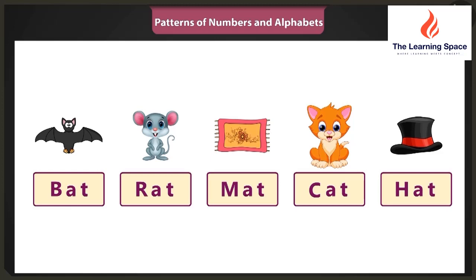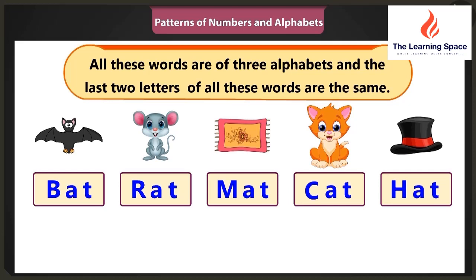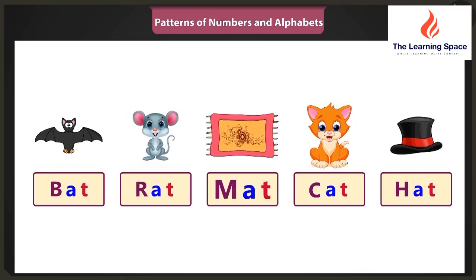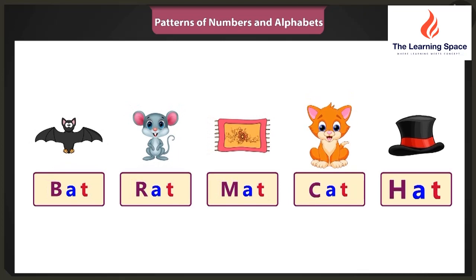Here, all these words are of three alphabets and the last two letters of all these words are the same. Rightly said, Binnie. In all these words, the second alphabet is A and the third alphabet is T. So it does become a pattern of alphabets. Oh yes. B-A-T Bat, R-A-T Rat, M-A-T Mat, C-A-T Cat, and H-A-T Hat. They make an interesting pattern.